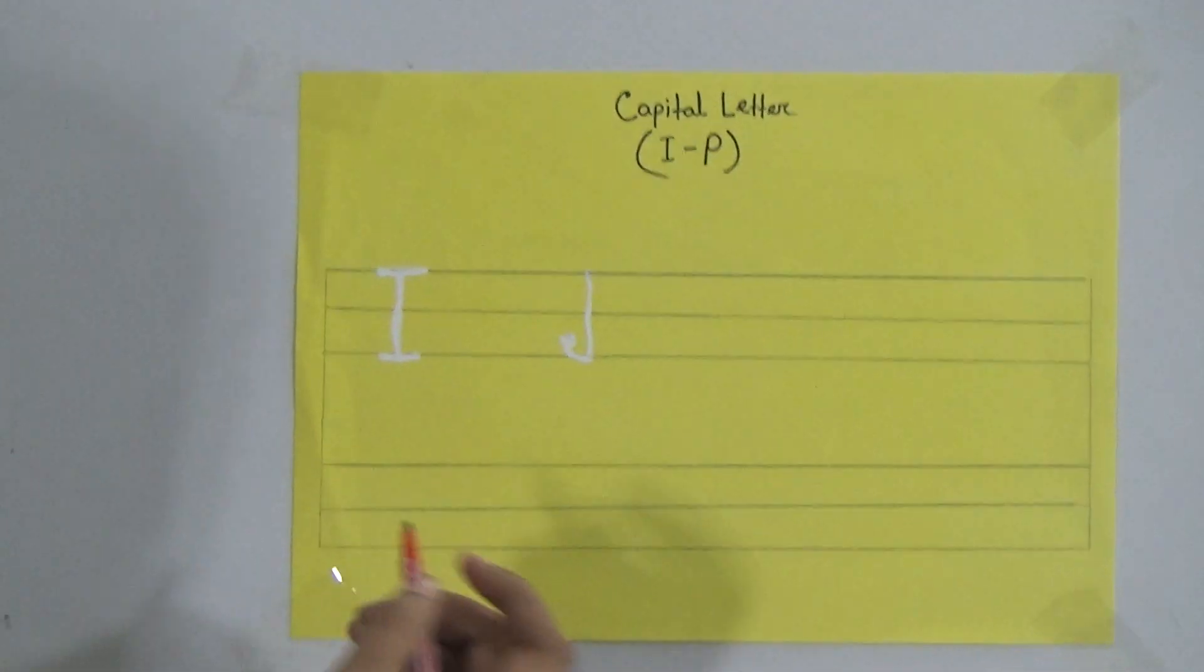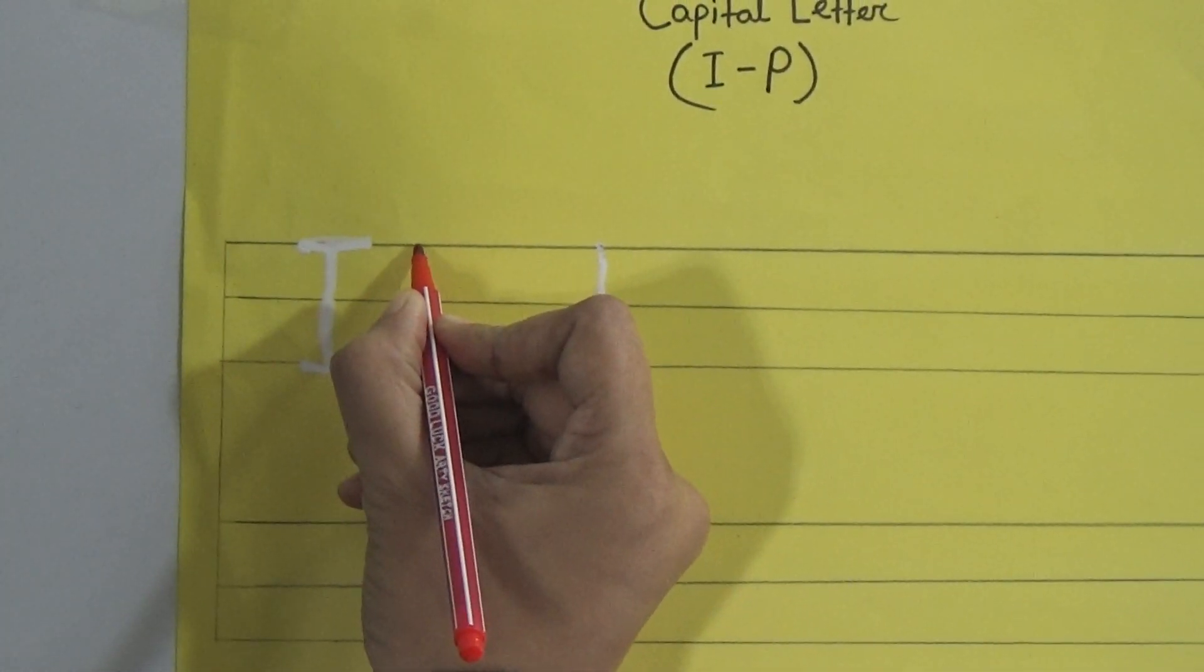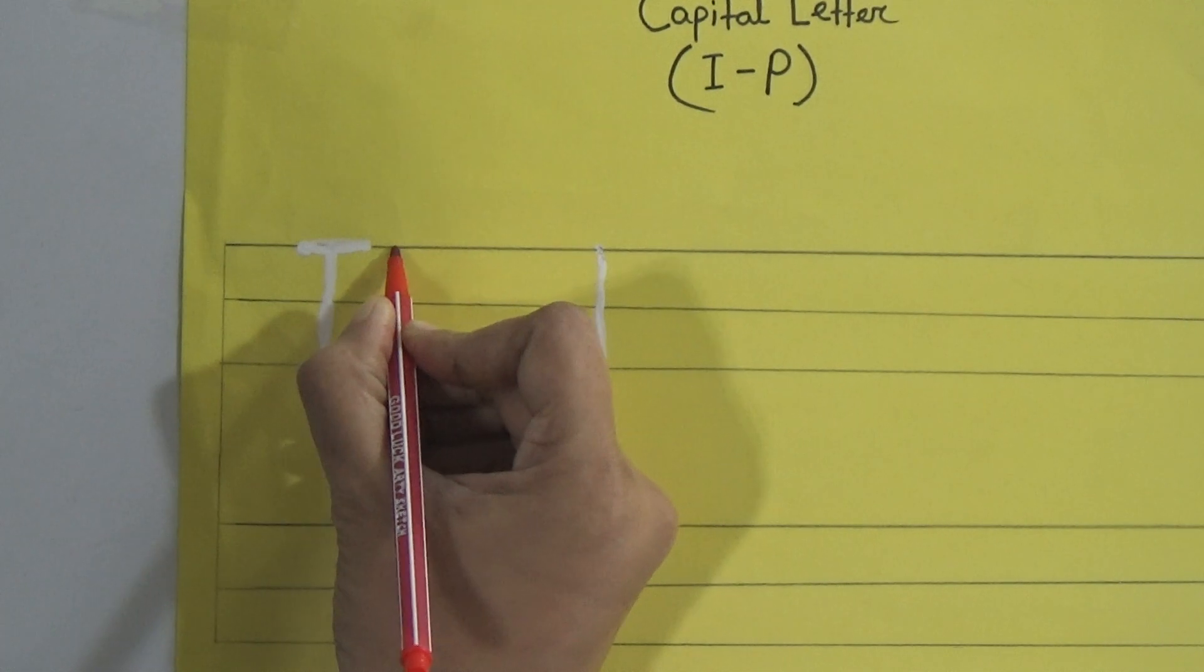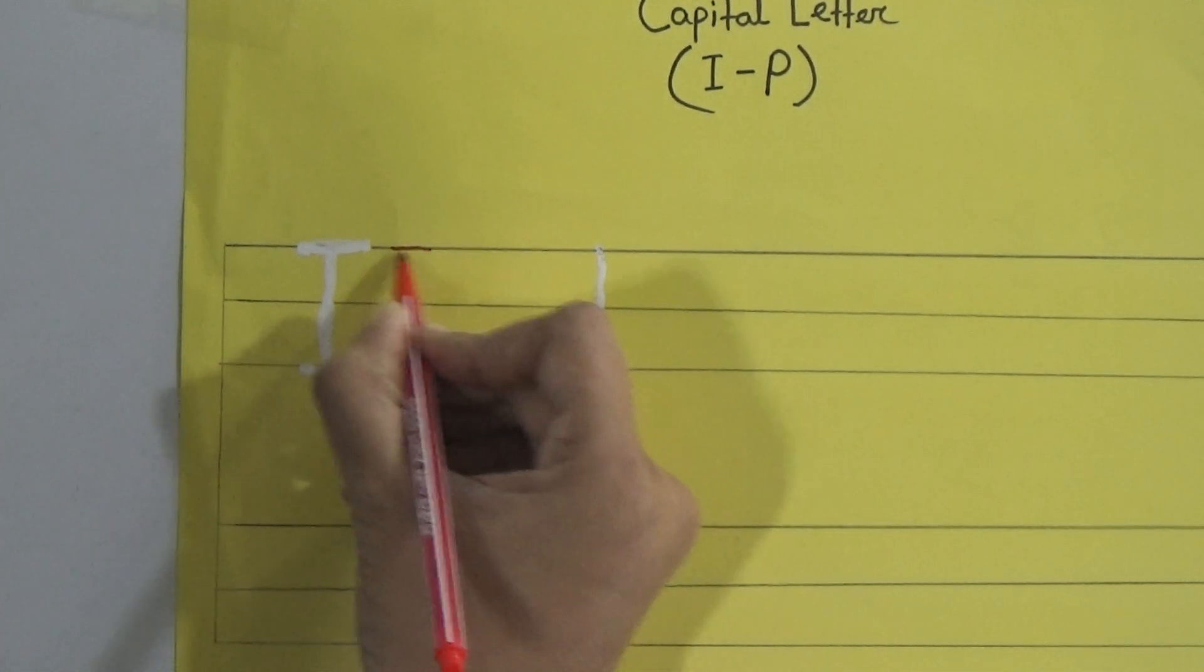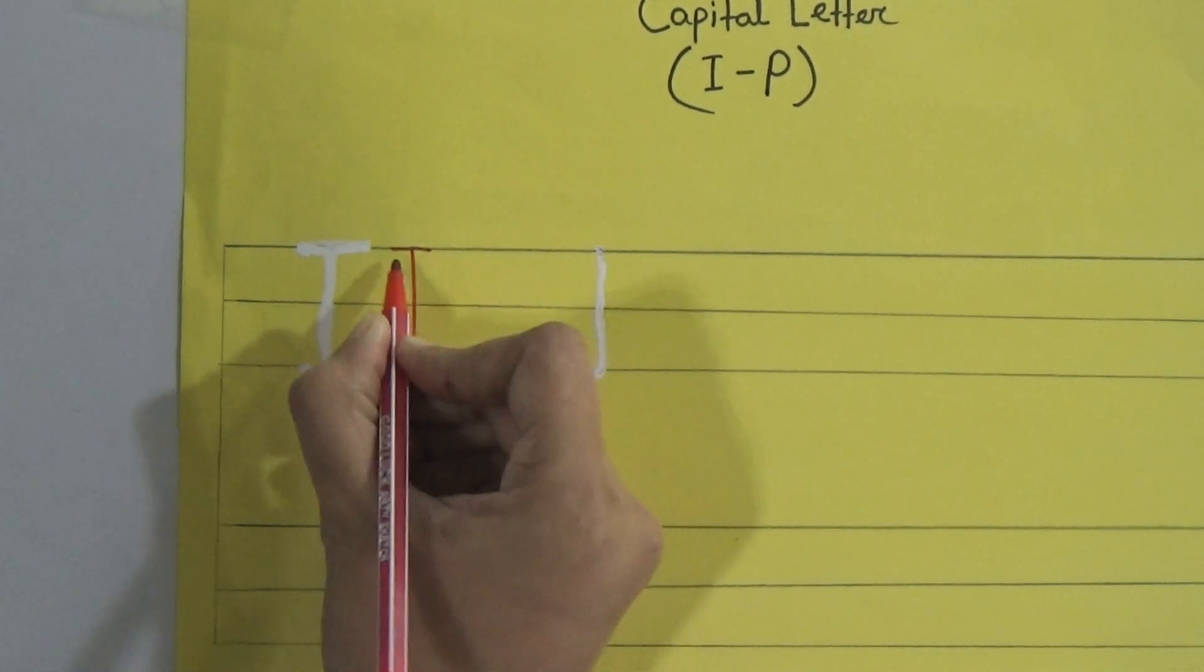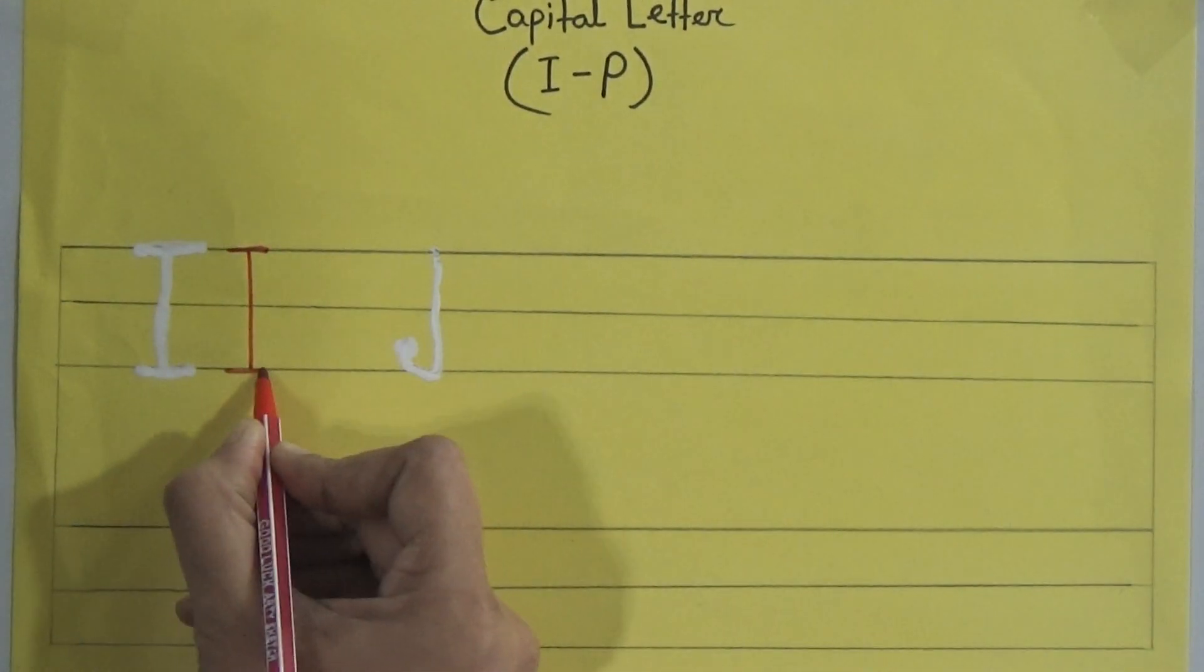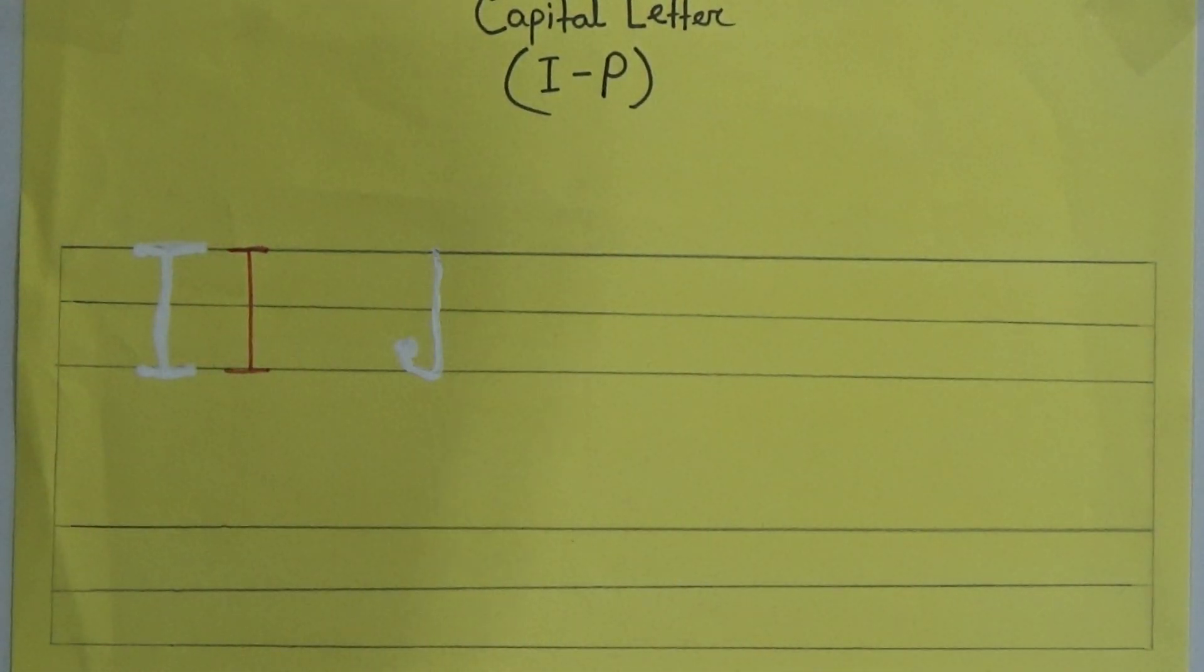At first we will start with I. I starts from the top. At first, write one standing line here, and another two slipping lines, one at the top and another at the bottom. That makes I.